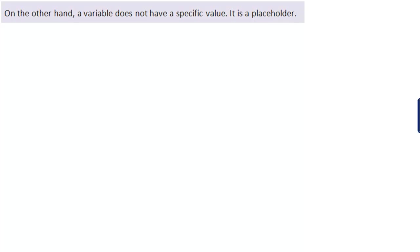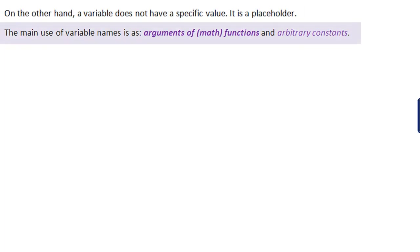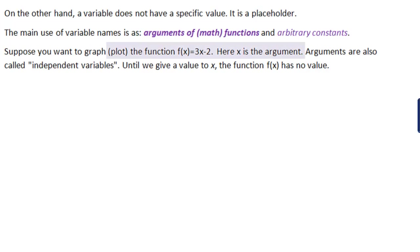On the other hand, a variable does not have a specific value. It is a placeholder. The main use of variable names is as arguments of math functions and as arbitrary constants. Suppose you want to plot the function f of x equals 3x minus 2. Here x is the argument. Arguments are also called independent variables. But until we give a value to x, the function f of x has no value. So we need to reserve a place for x. And then we can assign it values. And then f of x will have values.